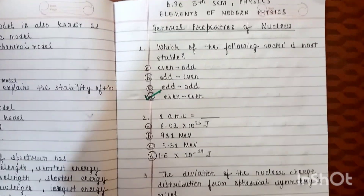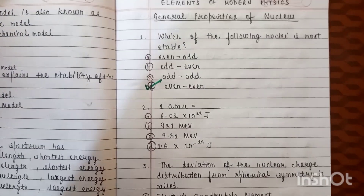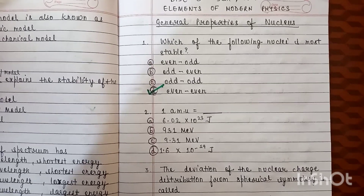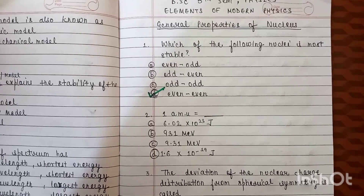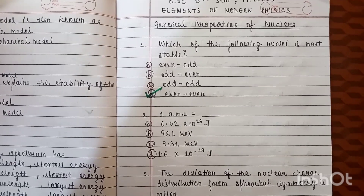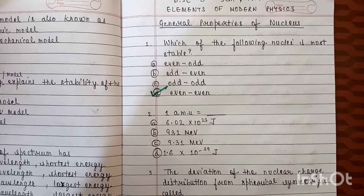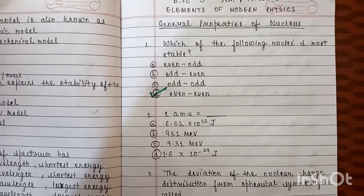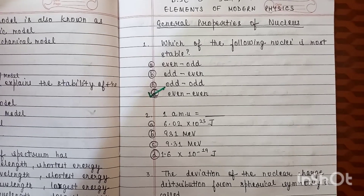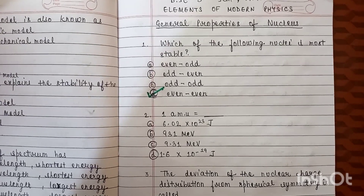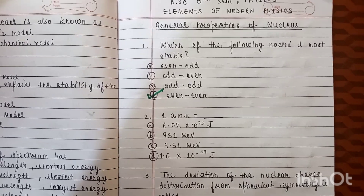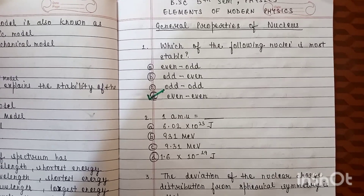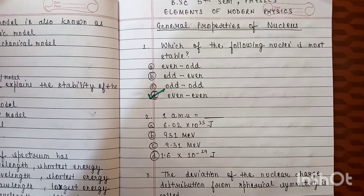Even-even. Question number 2: 1 AMU, i.e., atomic mass unit, is equal to — Option A: 6.02 × 10²³ joule. Option B: 931 mega electron volt. Option C: 9.31 mega electron volt. Option D: 1.6 × 10⁻¹⁹ joule.